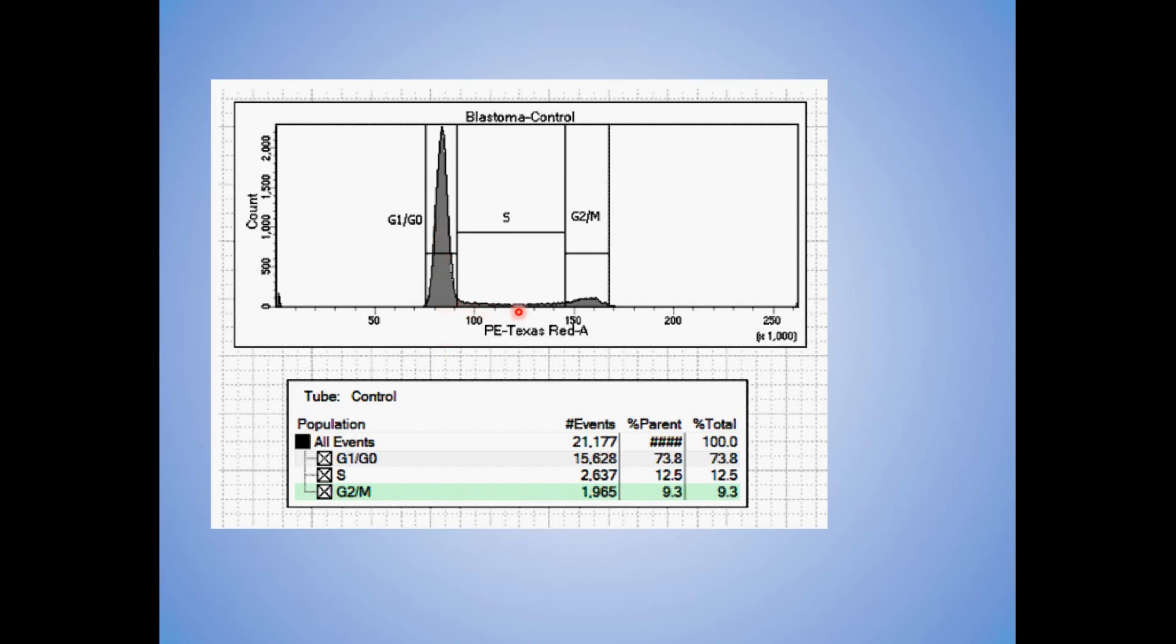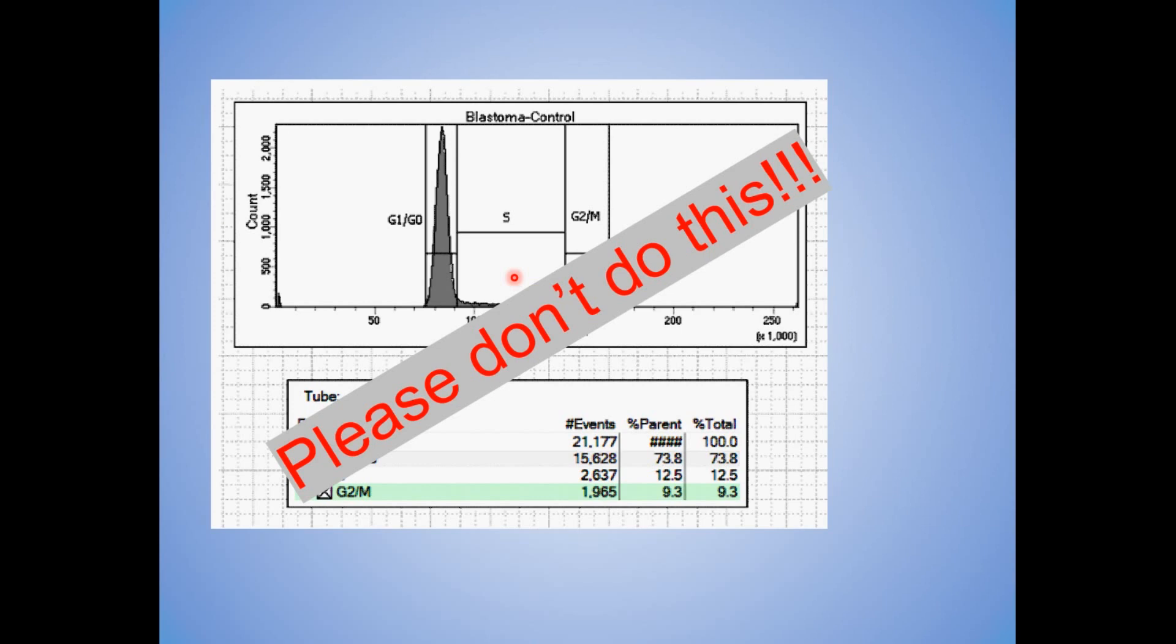And this is where you would take that cell cycle data, as shown here, and you would put regions for G1, G0, S, and G2M. The simple upshot is your core staff would prefer you simply didn't do this. We're going to talk about a couple of reasons why not shortly.